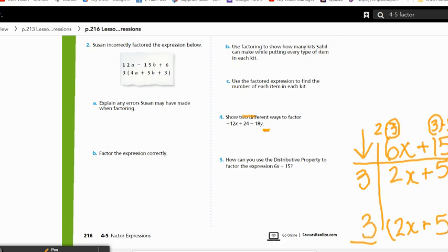So that goes on the outside. And then here is my factored version, 3 times 2x plus 5. And I can check my answer by using the distributive property. 3 times 2 would be 6x, 3 times 5 would be 15, and there would be a plus sign between them. So yes, I have the right answer. I've just checked my work.